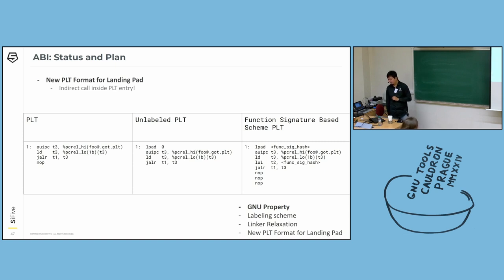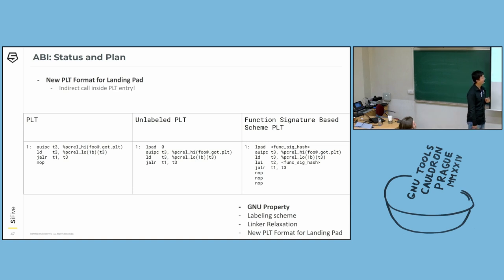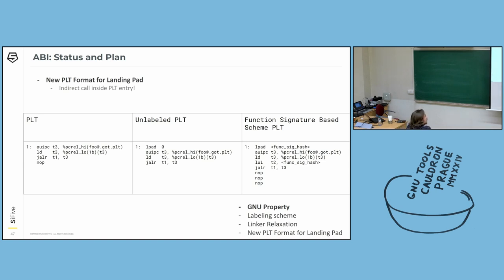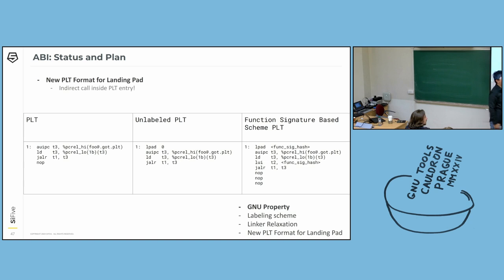Finally, the PLT. PLT must define a new format because every PLT entry is currently an indirect jump. For the unlabeled scheme you must place a landing pad since someone may take a function pointer from the PLT entry. For the function signature scheme you need to insert two more instructions: one is a landing pad in case someone jumps to this PLT entry indirectly, and another is to set up the landing pad value again, because if someone jumps to this PLT entry via a direct jump — not an indirect way — they didn't prepare the landing pad value, so you must set up one within the PLT entry.